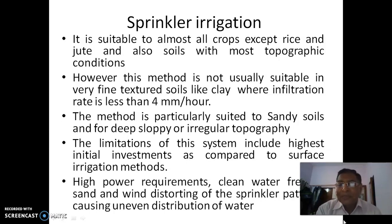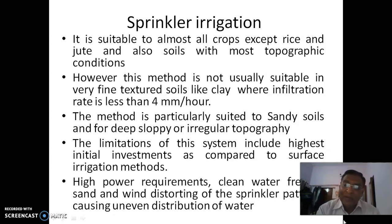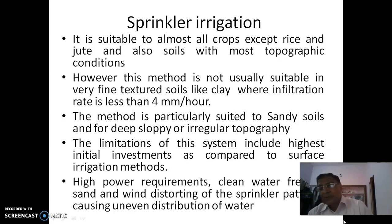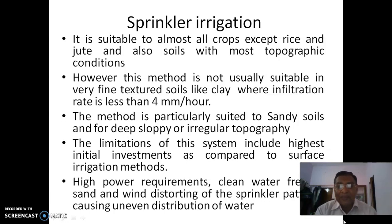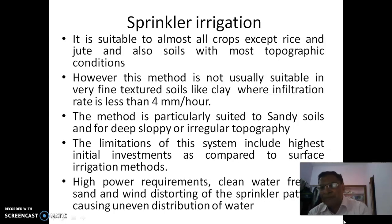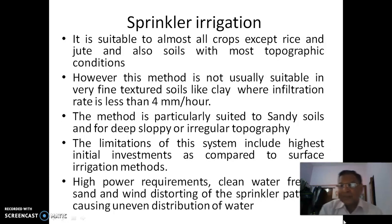The limitations of this system include the highest initial investment compared to surface irrigation methods, high power requirements, and the need for clean water free of sand. Wind distorts the sprinkler patterns — when wind is too strong, the wetting patterns get distorted. Clean water is required because the orifices are very fine; even a small grain or particle embedded in these fine orifices can spoil the entire sprinkler. That covers the sprinkler's adaptability to various situations.